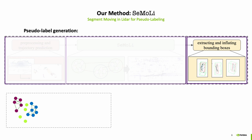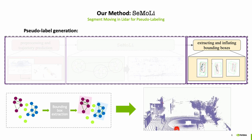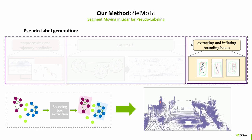From the point clusters, we can then extract bounding boxes. We do this by re-utilizing our initial trajectory prediction to obtain a bounding box orientation. We then extract the smallest enclosing bounding box around the point cluster to get our final pseudolabels.